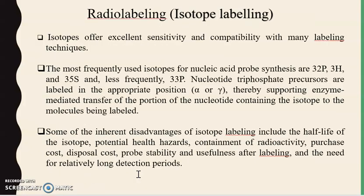Isotope labeling has been used for a long time due to its sensitivity and compatibility with many labeling techniques. In this technique, nucleic acid probes can be labeled with isotopes of phosphorus, hydrogen, and sulfur, which are added in nucleotide triphosphate precursors at the alpha or gamma position, supporting enzyme-mediated transfer of the isotope-containing nucleotide portion to the molecule being labeled.